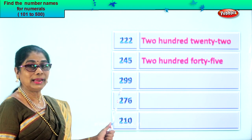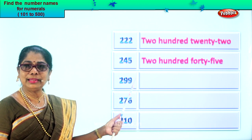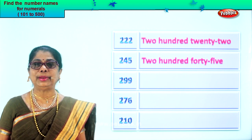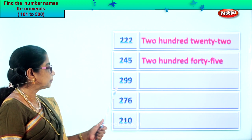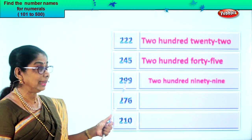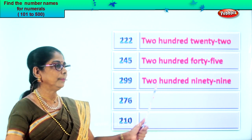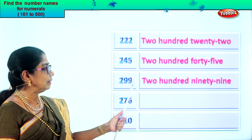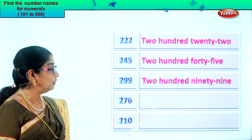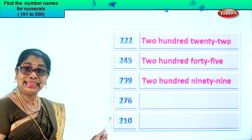Let's take the next numeral. You have here two, nine, nine — nine in the ones place, nine in the tens place, two in the hundreds place. Read on: two hundred ninety-nine. So first we write two hundred, then ninety-nine. Two hundred ninety-nine.